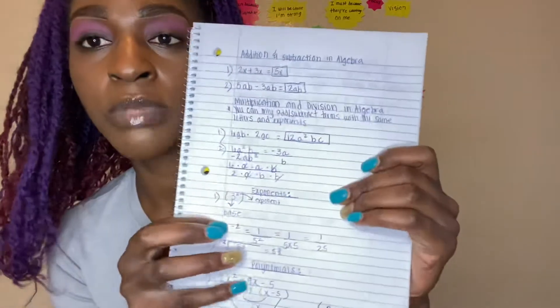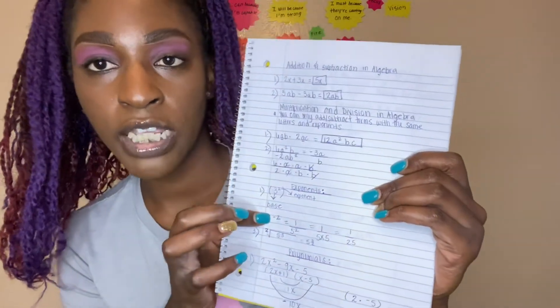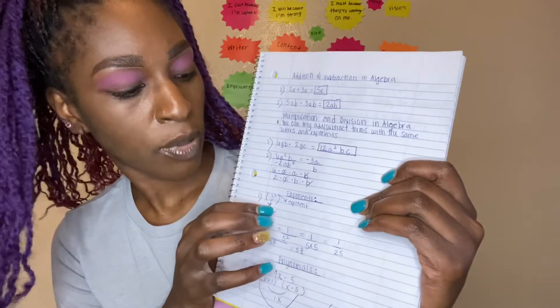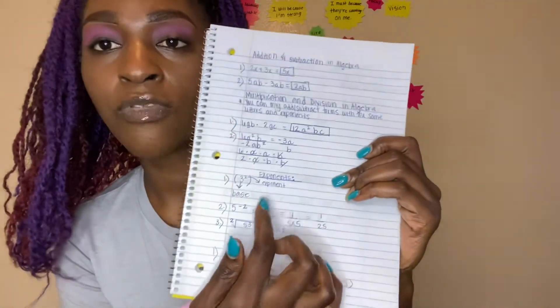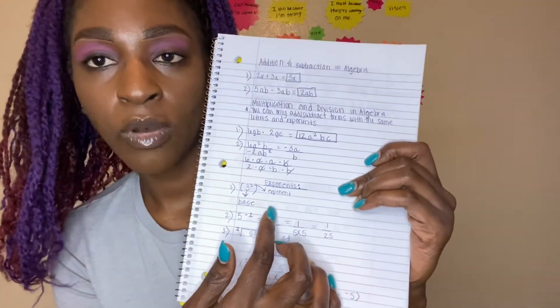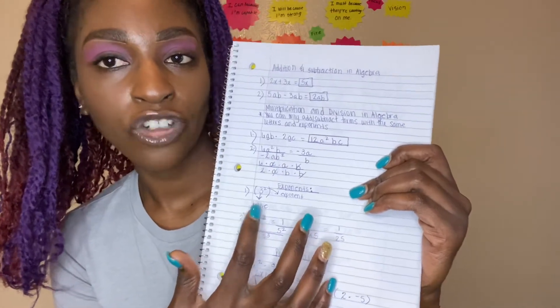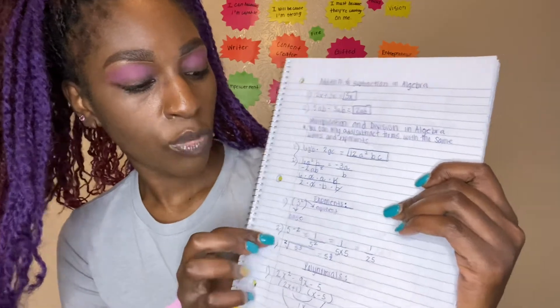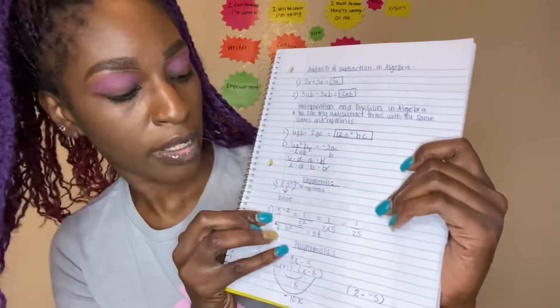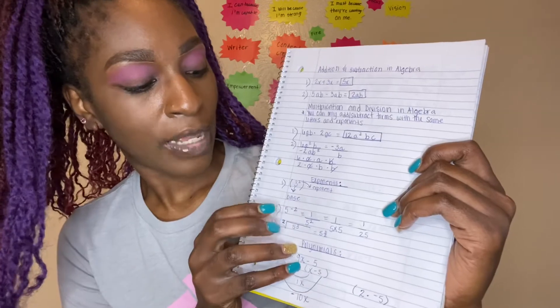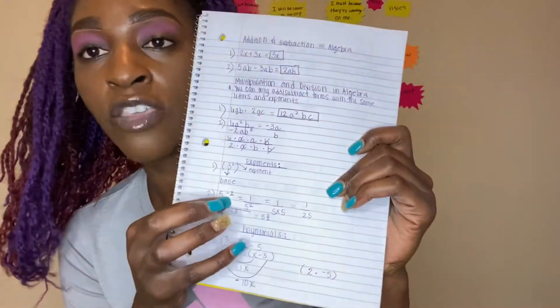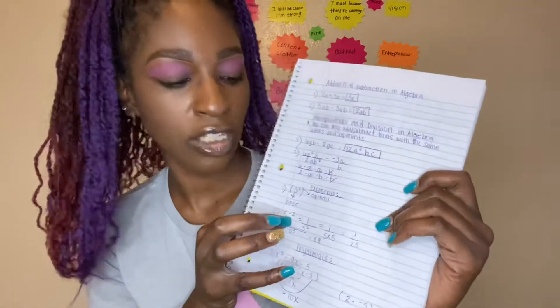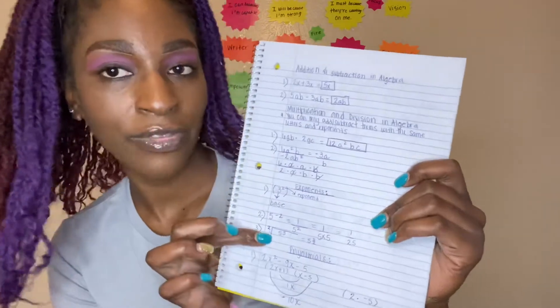Exponents is something else that is on the GED test. The little number at the top right is always the exponent, and the bigger number is your base number. Whenever you get a negative exponent — like negative 5 to the negative 2 — you cannot solve that. You have to do something called drop down, and on the next page I will go into that.